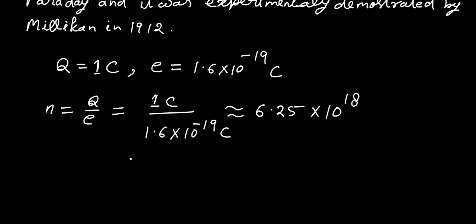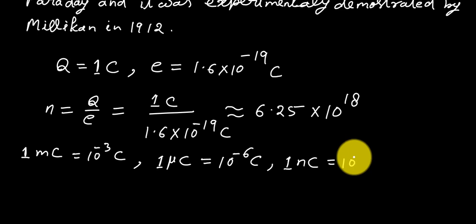1 Coulomb charge is a huge amount of charge. Practically, we use smaller units for charge like millicoulomb mc, microcoulomb mc, nanocoulomb nc, and picocoulomb pc, etc.